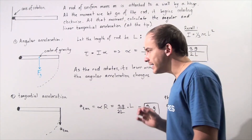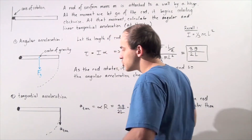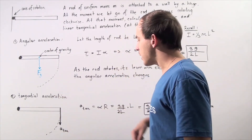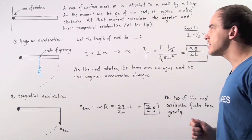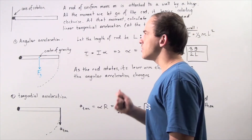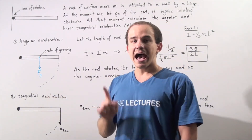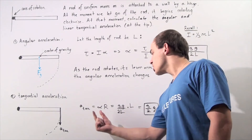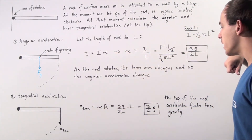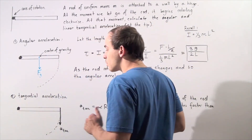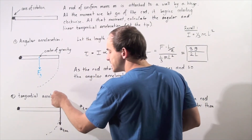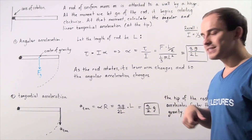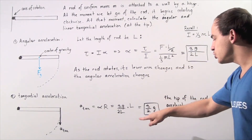Now let's look at part 2 — finding the tangential acceleration at the tip. At the moment we let go of the rod, it begins to rotate, and at that moment our tangential acceleration points in the same direction as the force of gravity. The formula relating tangential acceleration, distance, and angular acceleration is: a-tangential equals alpha multiplied by R. In this case, alpha is the value we found in part 1, and R is the entire length of the rod from the hinge to the tip. So we have 3G divided by 2L, multiplied by L. The L's cancel, and we're left with 3 divided by 2, or 1.5G.